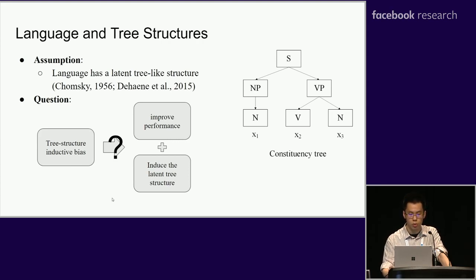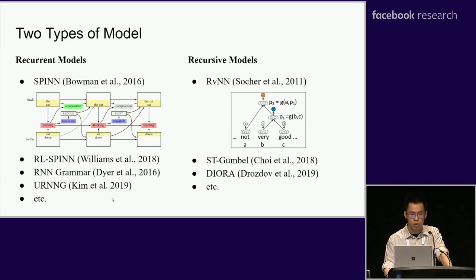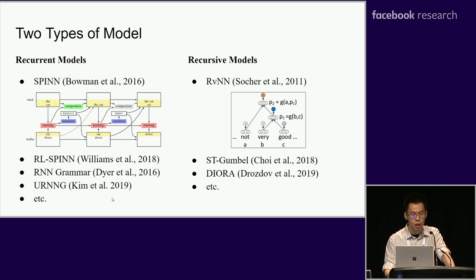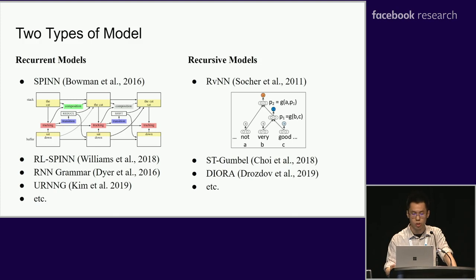To achieve this, there are two types of models that researchers have been working on. The first type is based on the recurrent structure — for example, the SPINN model sequentially reads the input from the buffer and uses a stack to store representations for constituents. The second type is based on the recursive structure — for example, the recursive neural network composes word-level representations into phrase-level and sentence-level representations with the same compositional function.